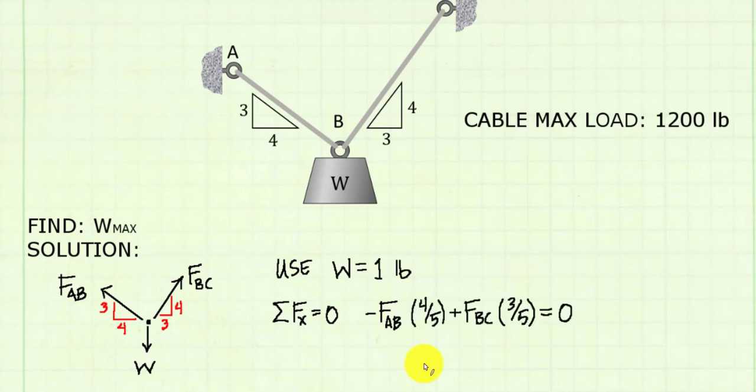I've written my equilibrium equation for the x-direction. I've got going to the left, so negative force AB. Its horizontal component is shown. It's going to be in the 4 direction, since it's horizontal, and divide by the hypotenuse, 5, since it's a 3, 4, 5 triangle.